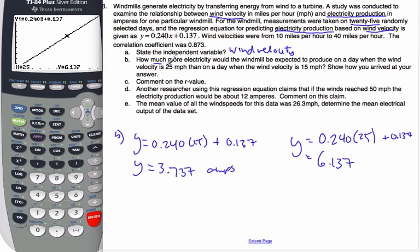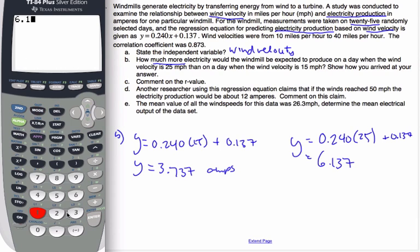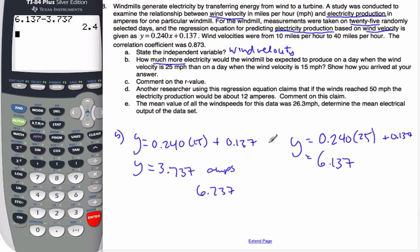And so, I want to find out how much more electricity is produced. This is how much is produced by 25 miles per hour. This is how much is produced by 15 miles per hour. Subtract the two, and I'll get 6.137 minus 3.737 is 2.4 amps more. So I found the amps for 25 and the amps for 15 miles per hour, subtract the difference.